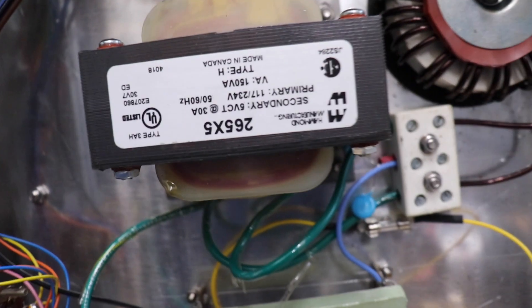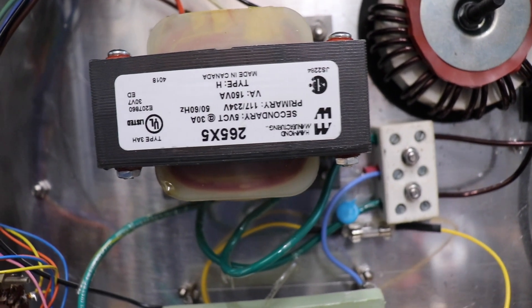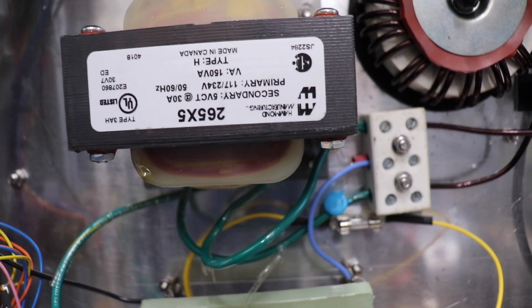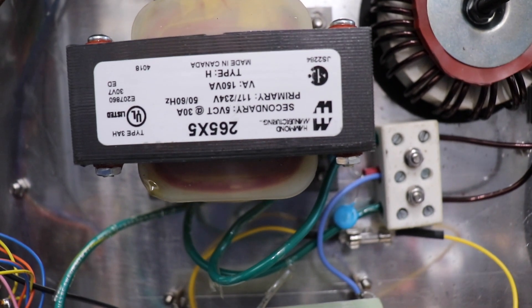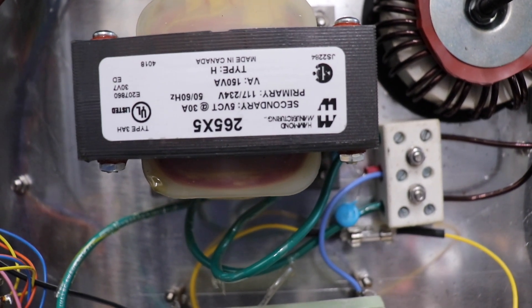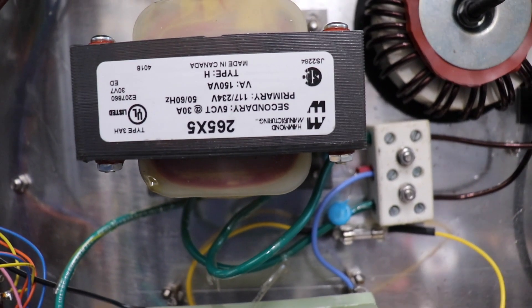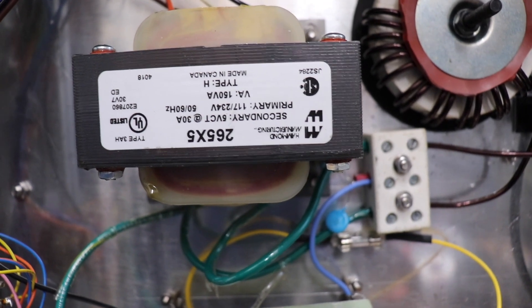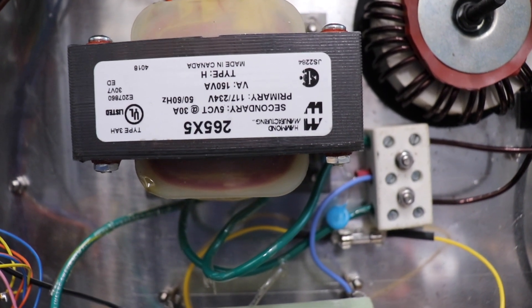That's the band switch, a few little light bulbs there, and then the filament transformer. That's quite a nice one you can get from Hammond, easily available from Mouser or Digi-Key. That will supply both tubes, 50 volts 30 amps.